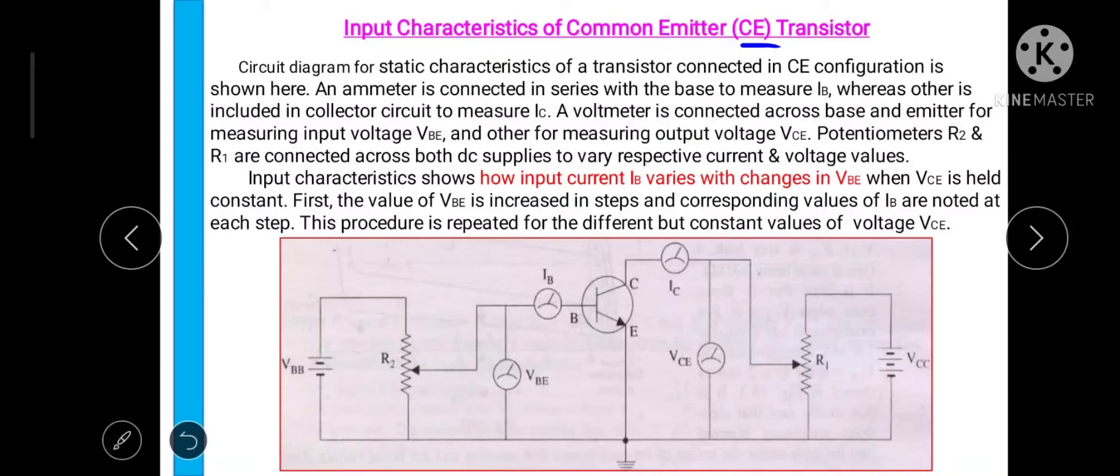The circuit diagram for static characteristics of a transistor connected in common emitter configuration is shown below. You please try to concentrate on circuit diagram. In the circuit diagram this particular main transistor is shown which is connected in common emitter mode.